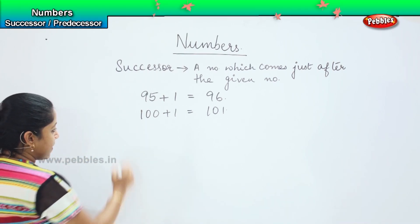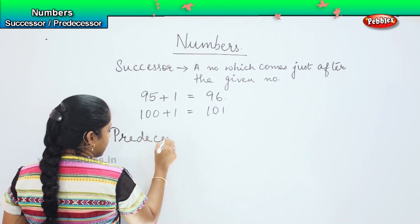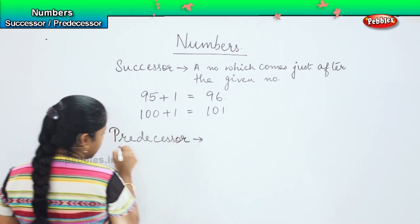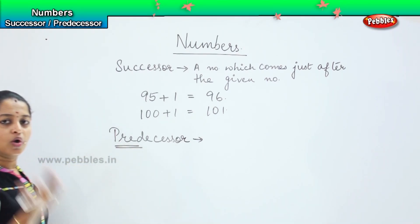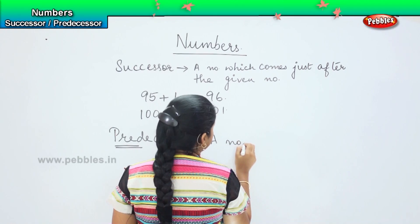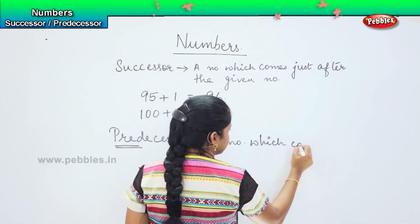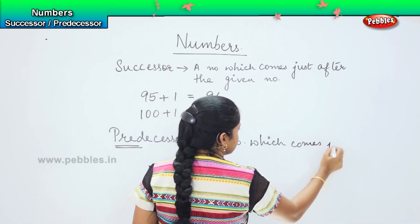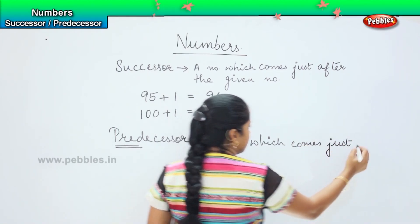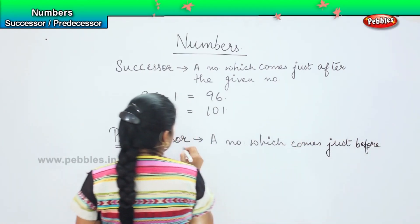Coming to the next one, it is predecessor. The name pre, pre means what? Before. So it means a number which comes just before the given number.